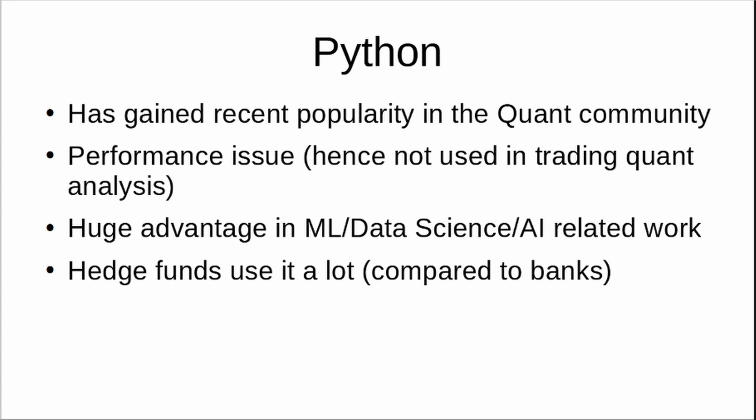Python also has the advantage of having so many machine learning and AI libraries. All the major tech companies are developing advanced ML libraries such as TensorFlow or Keras in Python, and such libraries are not as developed in other programming languages. Hence the future of quantitative finance could involve using Python more than C++, although currently C++ is the leading language. Hedge funds are already using Python a lot more these days compared to 10 or 15 years back.